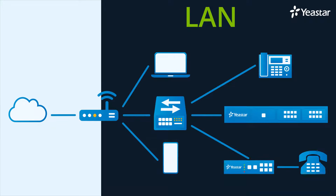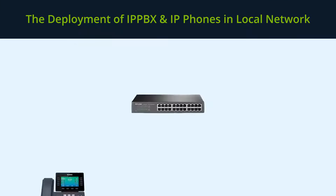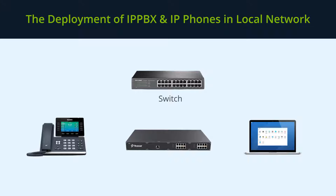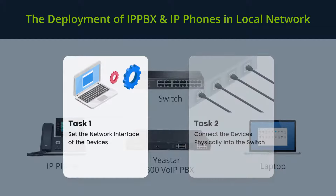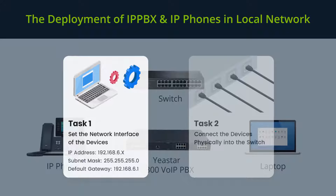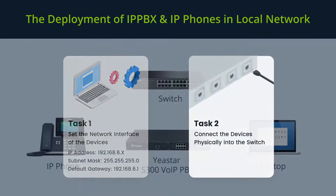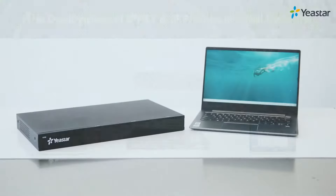Now let's turn to our internal system. In this video, we'll make use of the following devices: a switch connected to the local router, a Yeastar S300 VoIP PBX, an IP phone, and a laptop for configuring all these devices. We need to finish two major tasks on each device. The first is to set the network interface of the device — make sure they are under the same IP segment and following the local network rules, so they would be accessible from each other. Then connect all mentioned devices physically into the switch. Let's start with the IP PBX and the laptop.